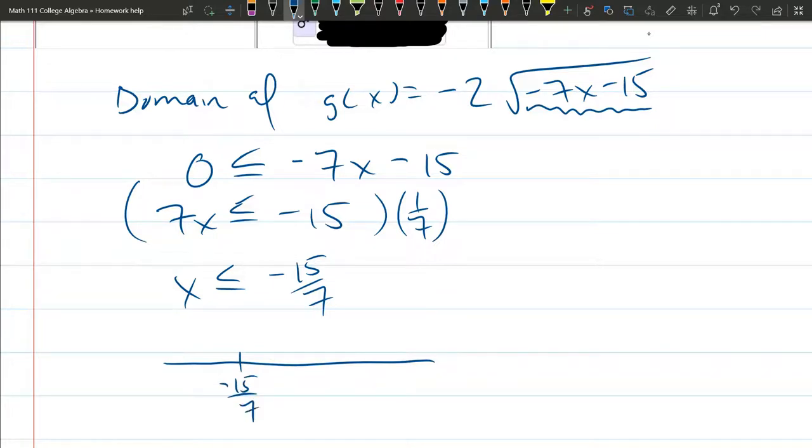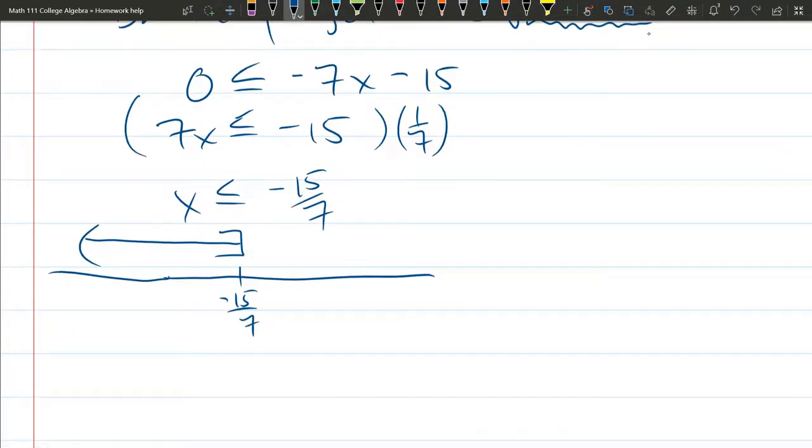Negative 15/7 is here and x needs to be less than negative 15/7. So that's to the left. It's okay to equal so you're going to use square brackets and we're going negative infinity comma negative 15/7 just like that.